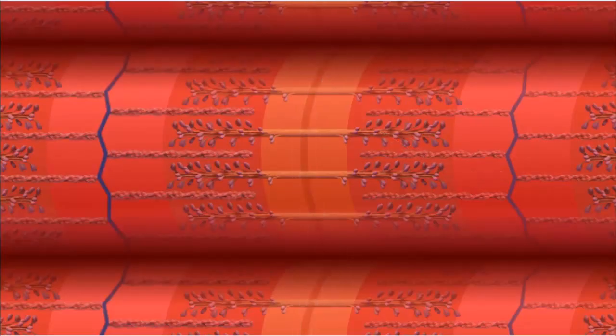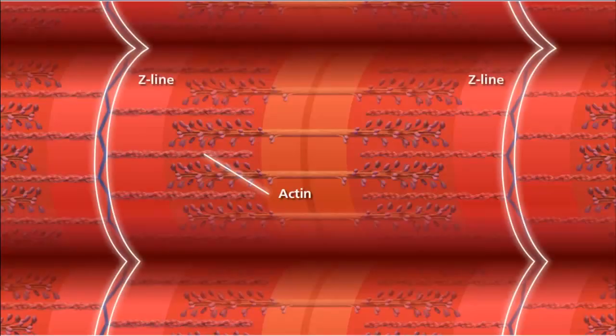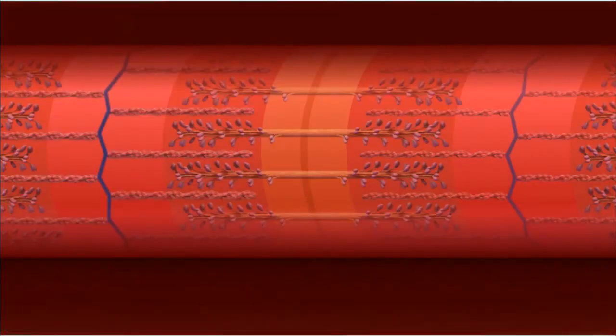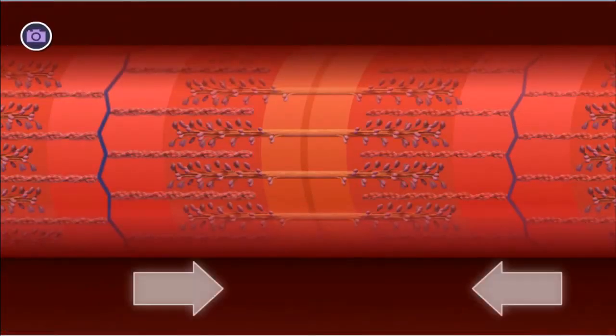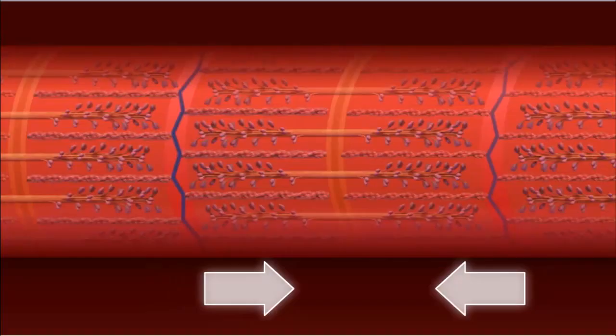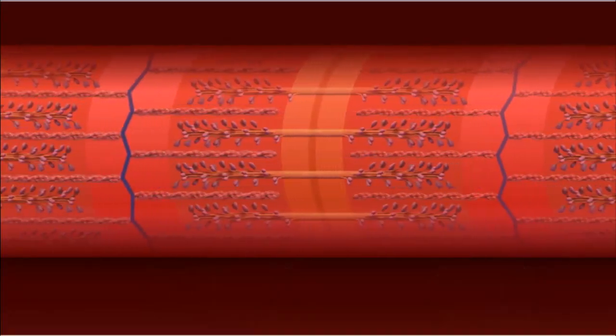The thin filaments are composed of the protein actin, which are anchored to the Z-lines on the outer edges of the sarcomere. Because the actin filaments are anchored to the Z-lines, the sarcomere shortens from both sides when actin filaments slide along the myosin filaments.